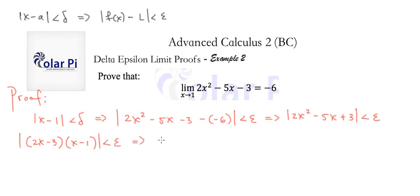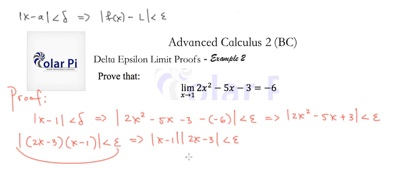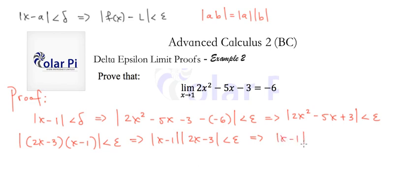This implies that |x - 1| · |2x - 3| < ε, using the commutative property of multiplication and the fact that |ab| = |a|·|b|. From here, we can write |x - 1| < ε / |2x - 3|.